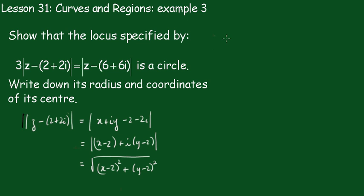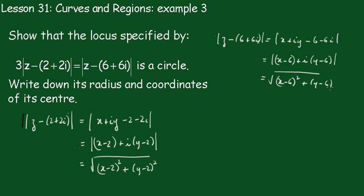Similarly for the other one, we see that z minus 6 plus 6i will be equal to x plus iy minus 6 minus 6i, which gives me x minus 6 plus i times y minus 6, which gives me the square root of x minus 6 all squared plus y minus 6 all squared.